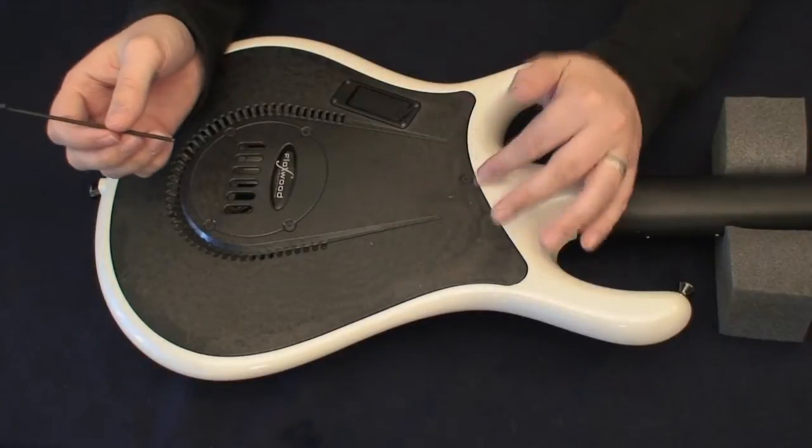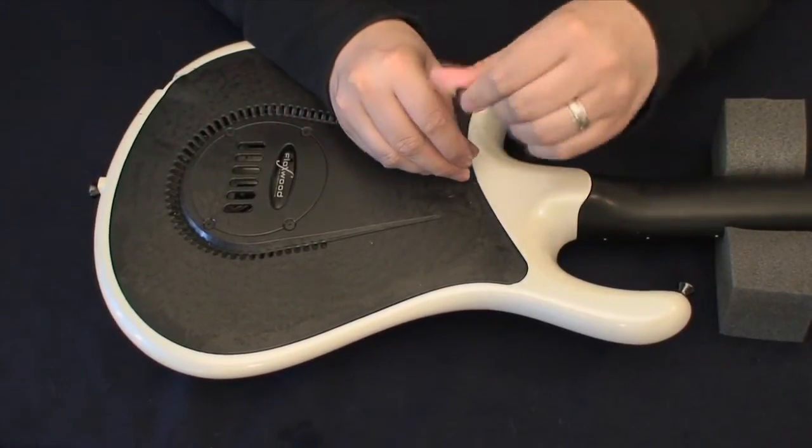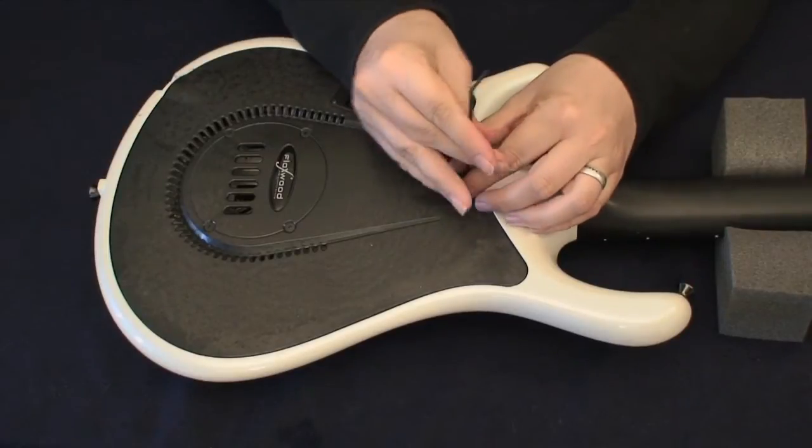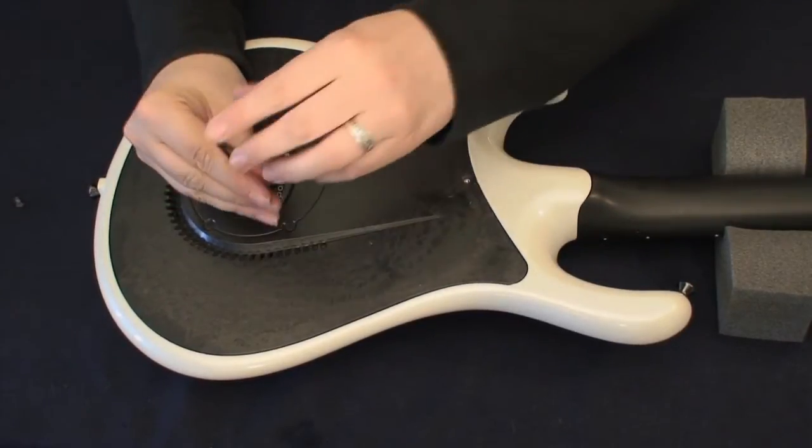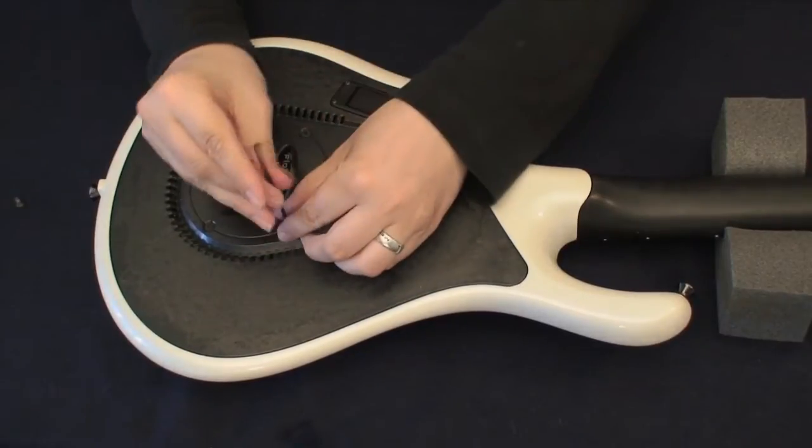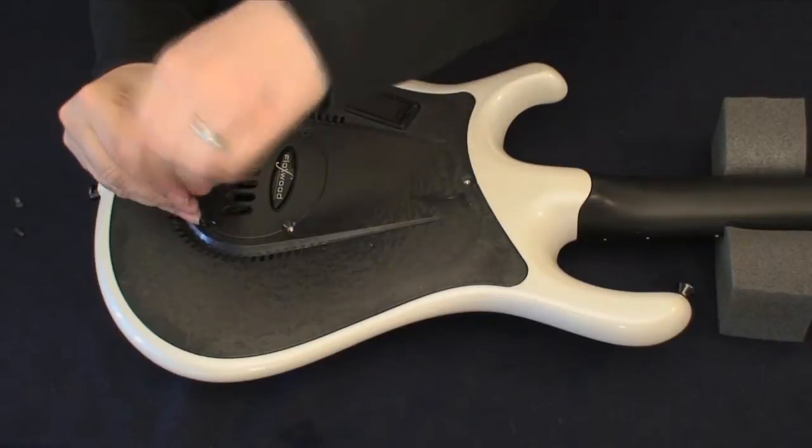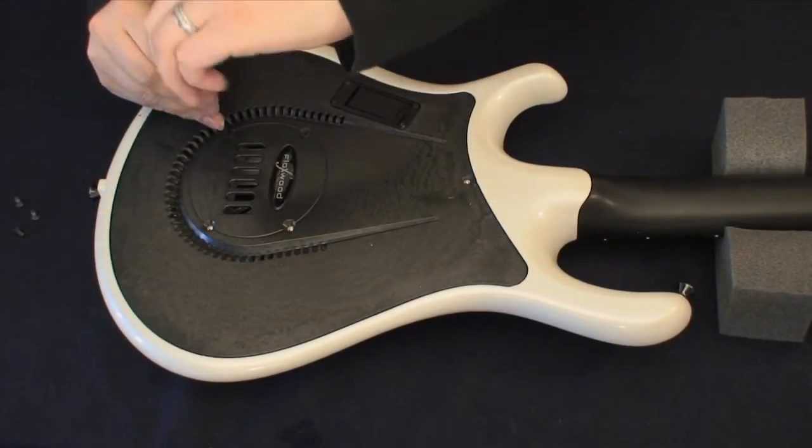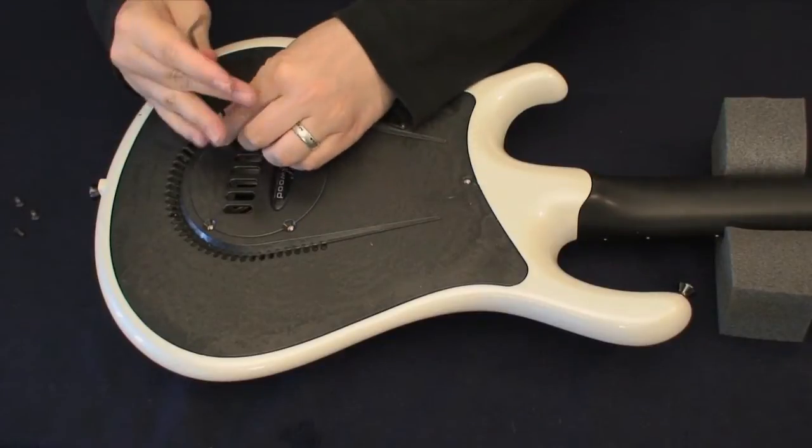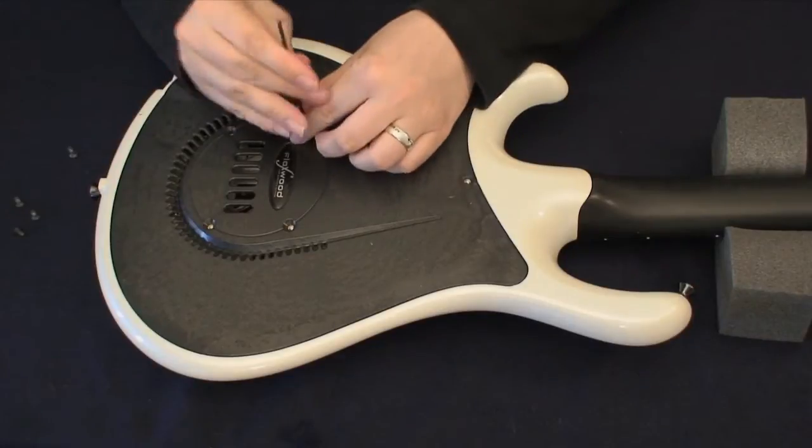There are five screws back here. Loosen them one by one, like so. One here, put that to the side. Two, three, four, and five.